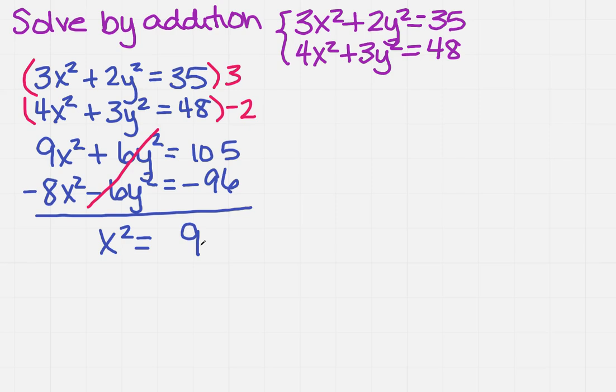So how do I get x by itself? I'm going to take the square root of both sides, and when I take the square root of a number, it's plus or minus that number. So I get x equals plus or minus 3.